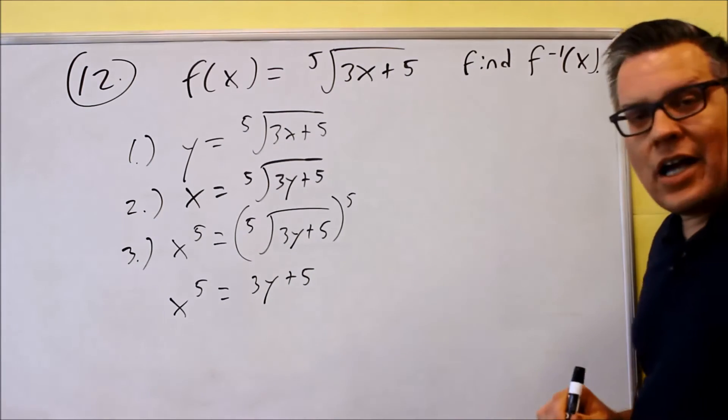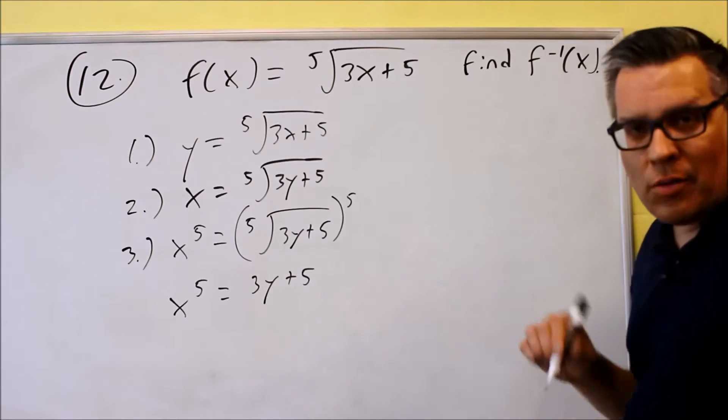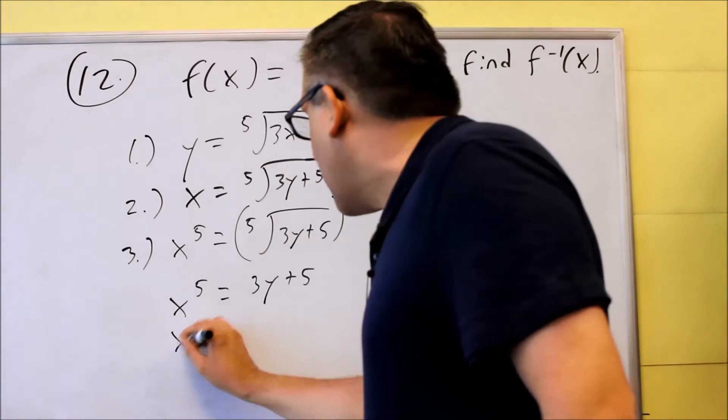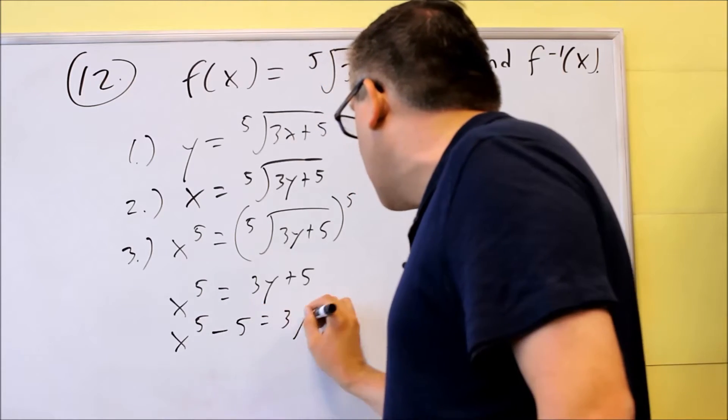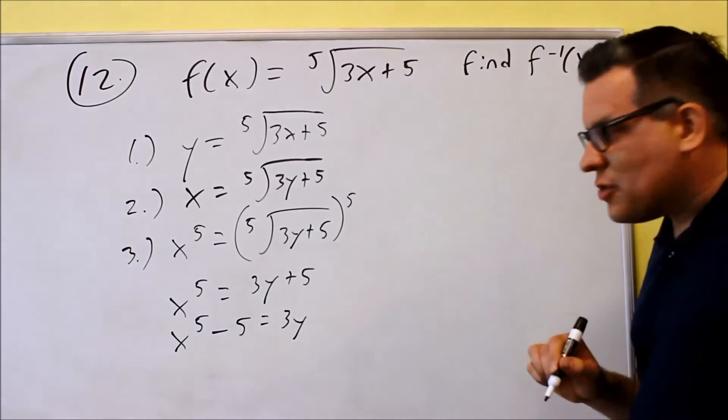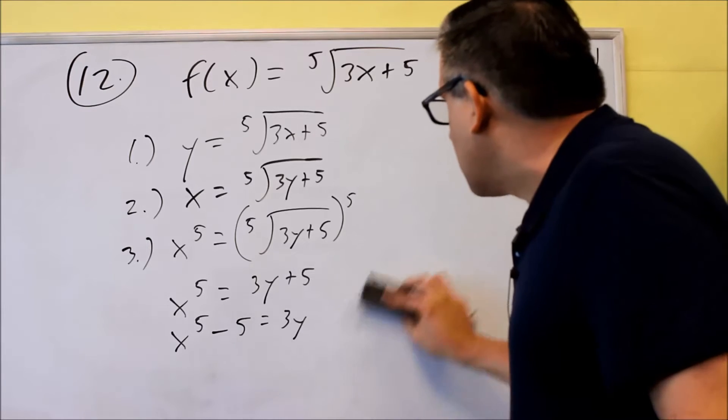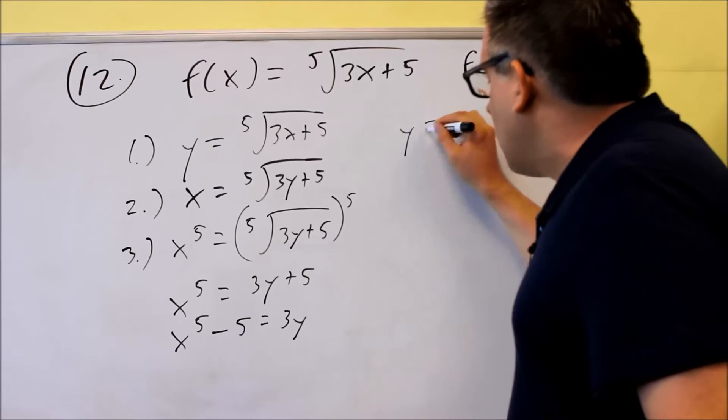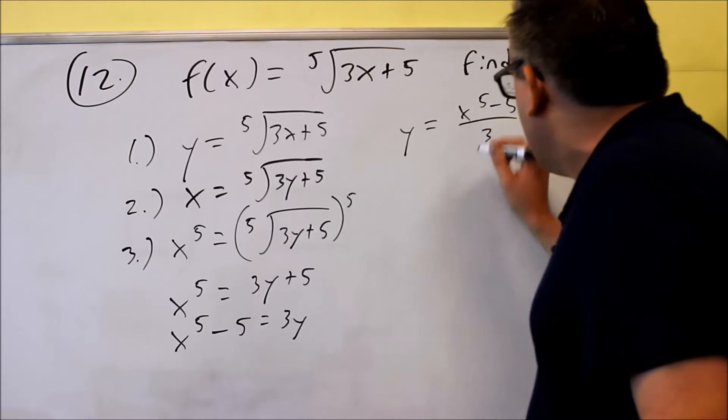Now I can isolate the y by subtracting the 5 and dividing by 3. If I subtract the 5 from both sides, I get x to the fifth minus 5 equals 3y. Divide both sides by 3, and I get y equals x to the fifth minus 5 all divided by 3.